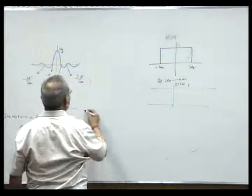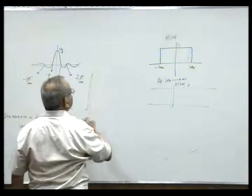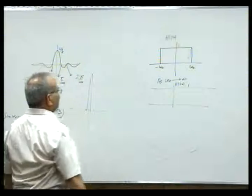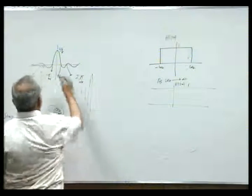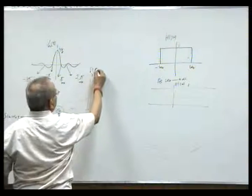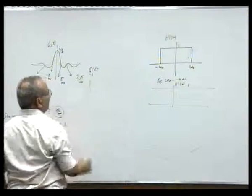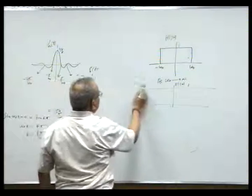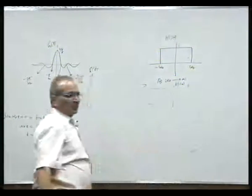That means this becomes an impulse function, and this is of course s t. In that case, this becomes an impulse function and you know the impulse function, the Fourier transform of impulse function is 1.